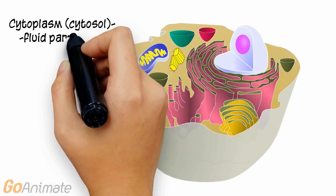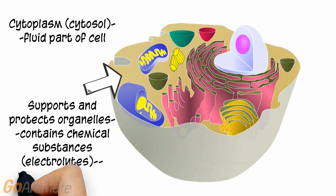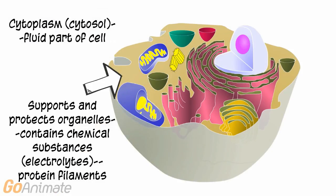The cytosol is the fluid part of the cell. It supports and protects the organelles. It also contains chemical substances, such as electrolytes and protein filaments.